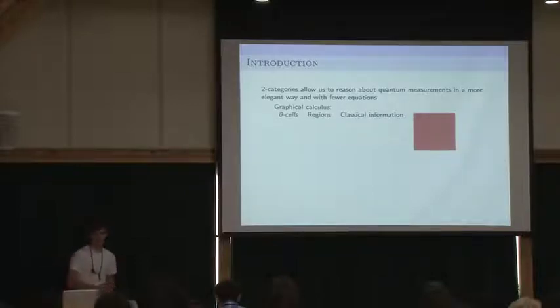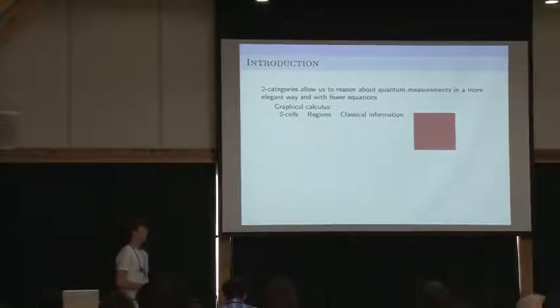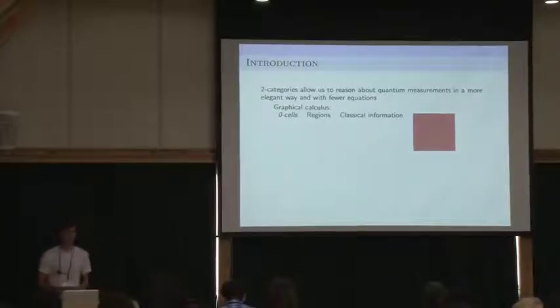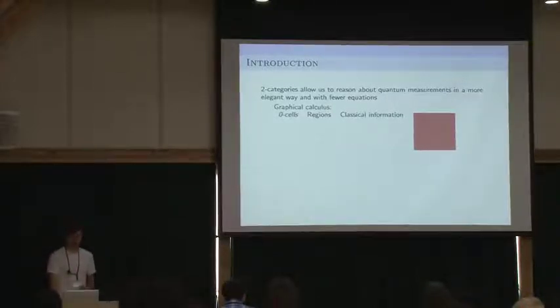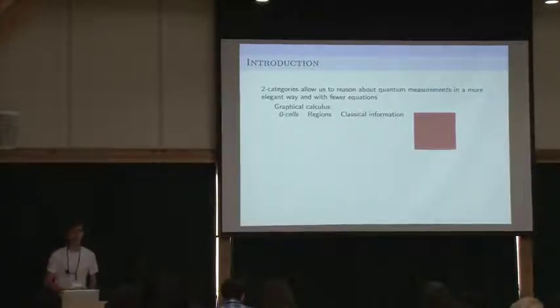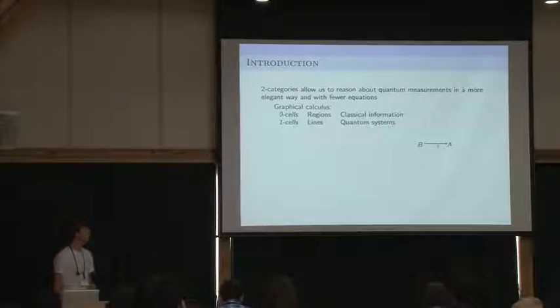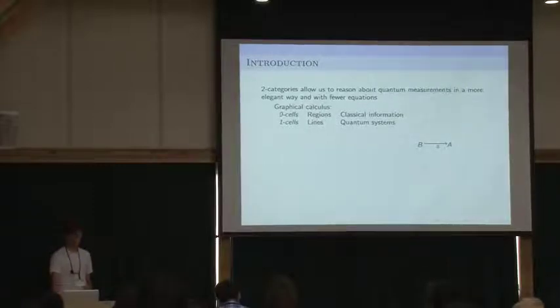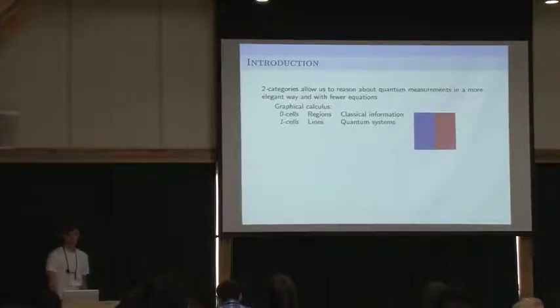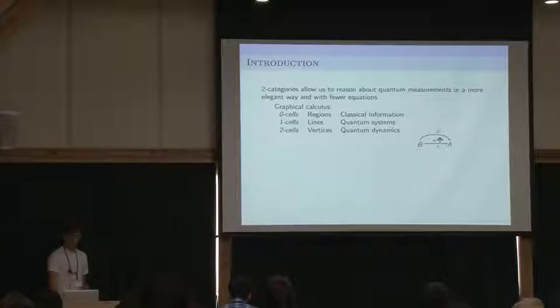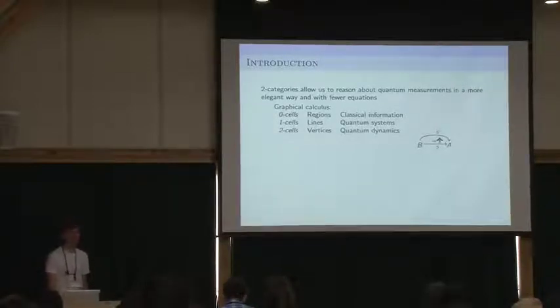Fortunately, there exists a graphical calculus that allows us to describe quantum phenomena in a very accessible way. This is also what we talked about during the morning. Objects into categories, or zero cells, are represented by regions, and they will be representing classical information for us. So here's an example of a region. One cells, or morphisms, are represented by lines, and they represent quantum systems. You can see over here a morphism between A and B. This gets transferred into a line that borders the two regions that represent objects. And then two cells will be represented by vertices, and they correspond to quantum dynamics, so evolution of quantum systems.